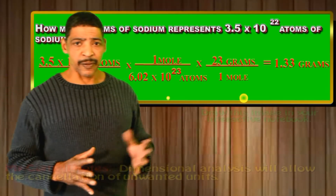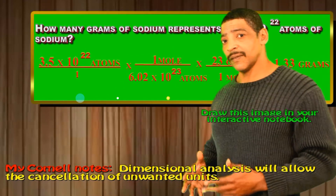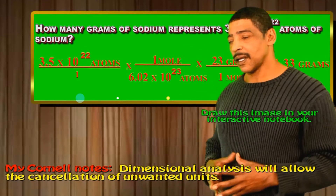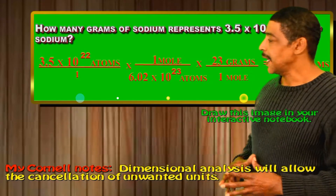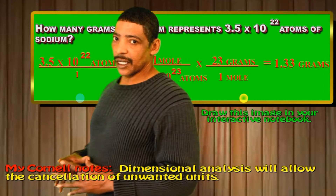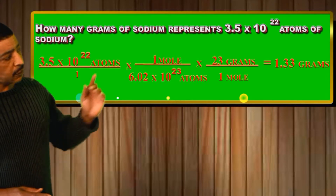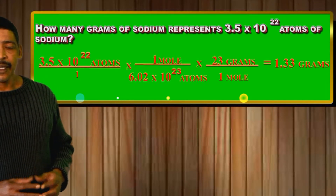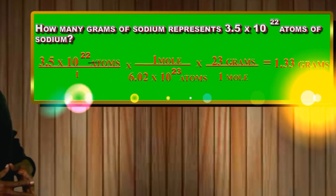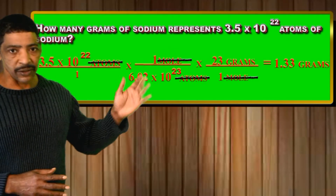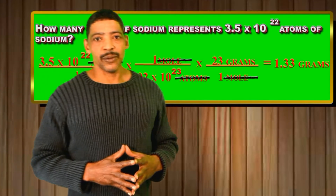The same calculations may be performed using dimensional analysis. For the example involving the sodium atoms, we place 3.5 times 10 to the 22 over 1, and multiply by 1 mole over Avogadro's number. Then we multiply by the gram-atomic mass of sodium, which is 23 grams over 1 mole. The units of particles and moles cancel, which leaves us with units of mass, and the answer is once again 1.33 grams.